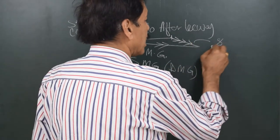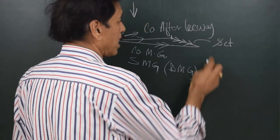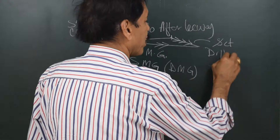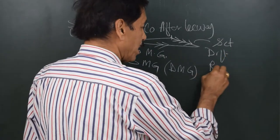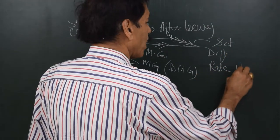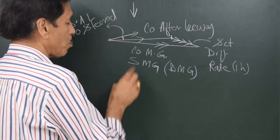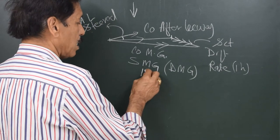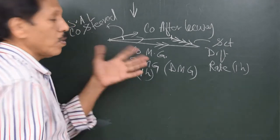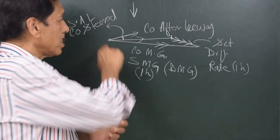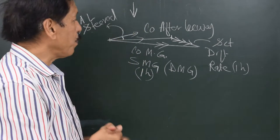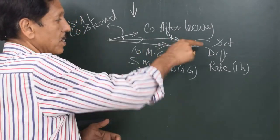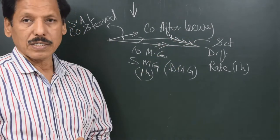The three-arrow line represents the direction in which the current is setting — set and drift. I can call it rate if the drift is for one hour, and I can call it Speed Made Good if the triangle is for one hour. So here is the vector triangle: small arrow line is Course Steered, one-arrow line is the leeway track or course after leeway, three-arrow line is set and drift, and two-arrow line is Course Made Good and Distance Made Good.